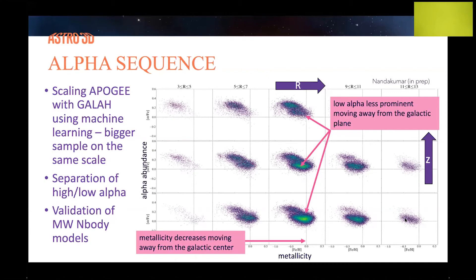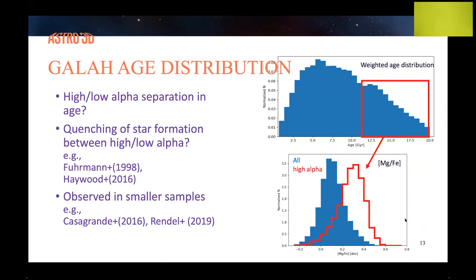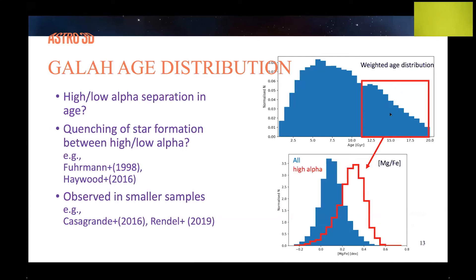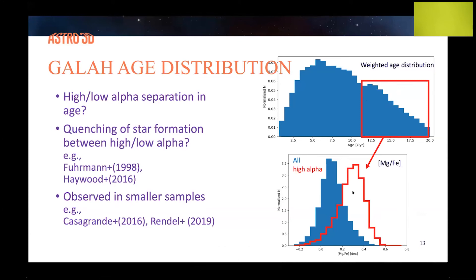Usually these alpha sequences are defined in chemistry, but we are starting to see their manifestation in the age distribution as well. Here is the age distribution function for the GALAH sample, corrected for the GALAH selection bias. We see some structure in this distribution, and I speculate that a secondary peak could be a manifestation of the high-alpha sequence. Looking at the chemistry of that peak, it is significantly more enriched in magnesium — an alpha element — lending credence to this interpretation. If real, it has implications for the star formation history, potentially indicating a quenching of star formation between the high and low alpha populations.